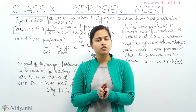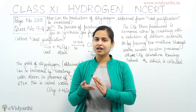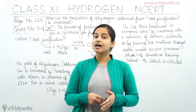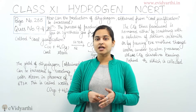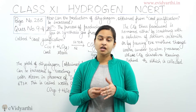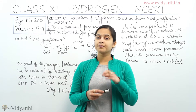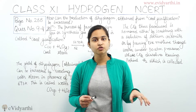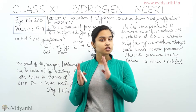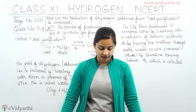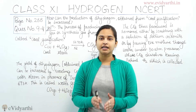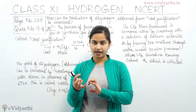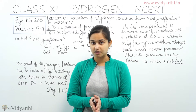We reacted carbon monoxide with steam in the presence of catalyst iron chromate at about 673 Kelvin, and we obtained carbon dioxide and dihydrogen. This reaction is called the water gas shift reaction. Now you may ask: what is the usage of the carbon dioxide that has been produced in this reaction?